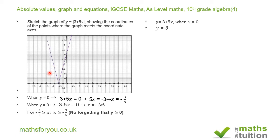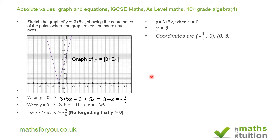Similarly, for the graph of minus 3 minus 5x, we have the second graph, and it also touches the x-axis at the point minus 0.6, or minus 3 over 5. So we can write the coordinates of the graph of y equal to the absolute value of 3 plus 5x as minus 3 over 5, 0 and 0, 3.